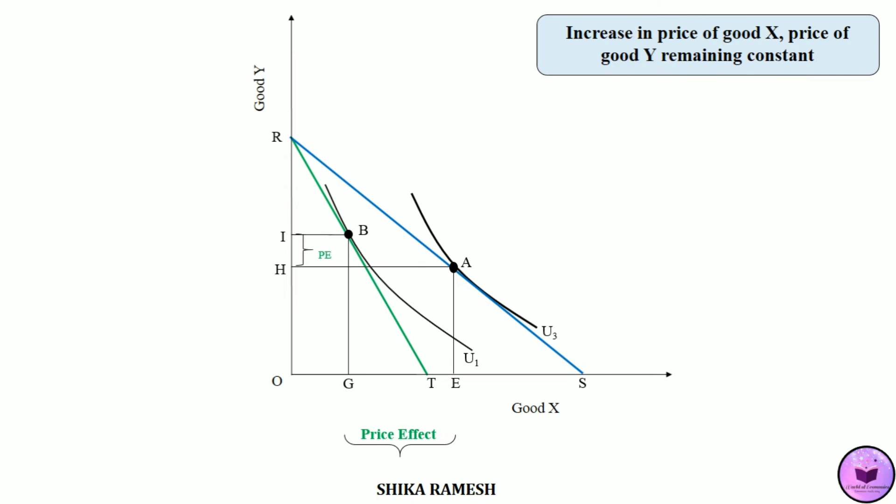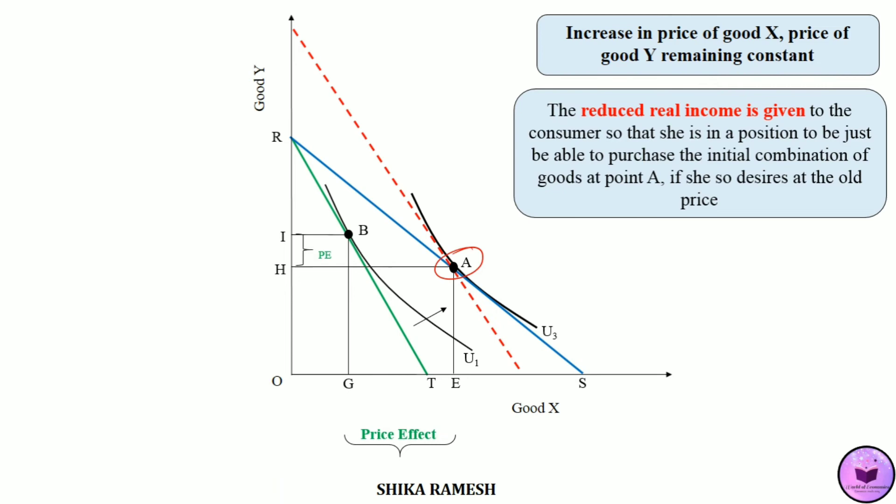The reduced real income of the consumer is given back to the consumer so that the consumer is able to purchase the initial combination of goods at point A. That is represented by drawing a budget line parallel to RT upwards, and that new budget line passes through the initial combination of goods — through point A — shown by the red dotted budget line. In this new red dotted budget line, the consumer reaches equilibrium at point C at U2 utility level.